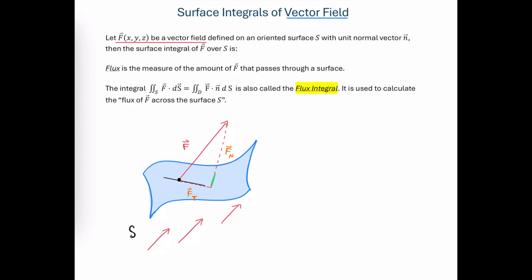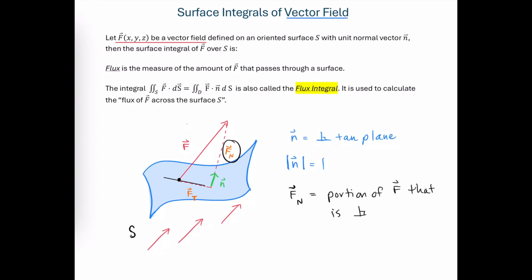Now let's consider this unit normal vector, and we'll call it n. This normal vector is perpendicular to the tangent plane to the surface at that point. It has a magnitude equal to one, and it's going to help us find the normal component of the force vector — the portion of the force acting perpendicular to the surface.